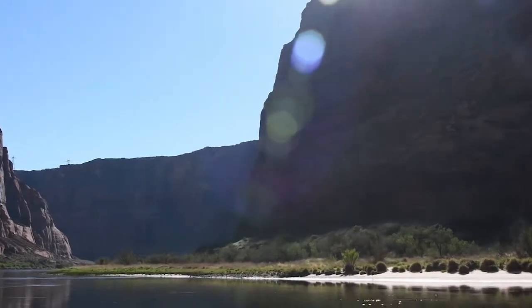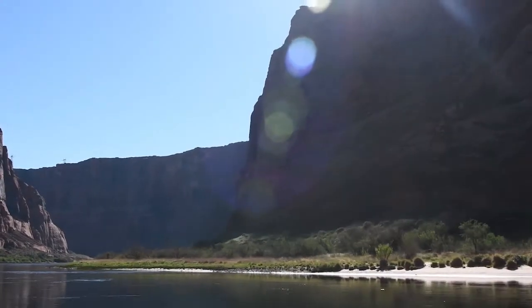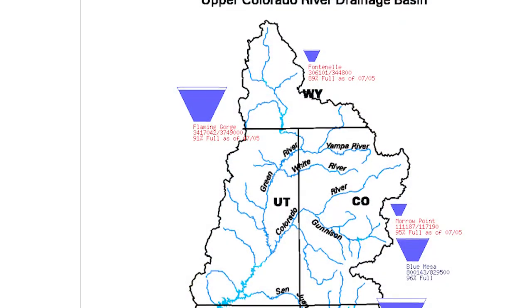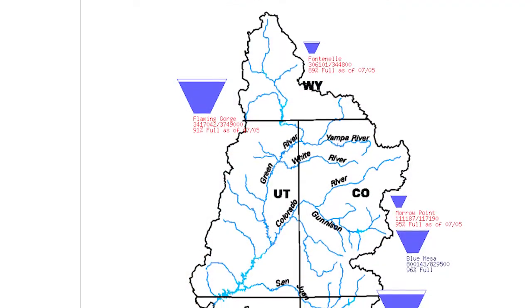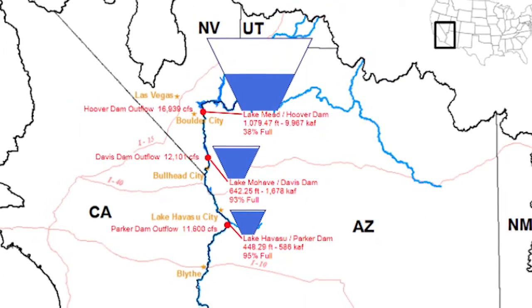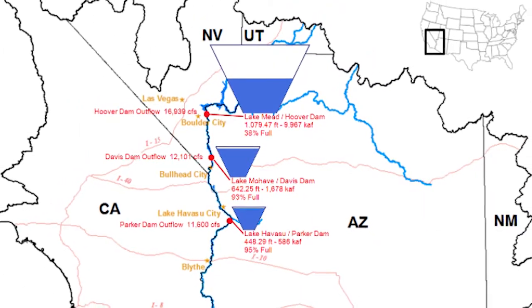Data visualization is taking raw data, which is usually numbers, and in our case it is numbers — it's hydrologic data — and then creating some image or some way of displaying the data which tells a story, which puts it in context. Data visualization is really a way to quickly get information out of raw data.